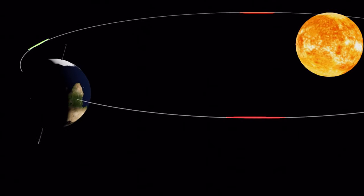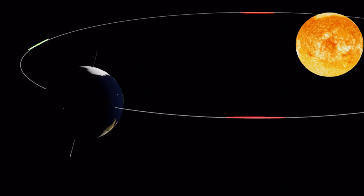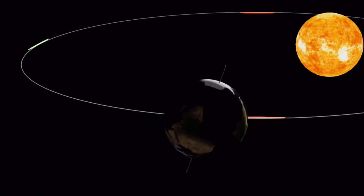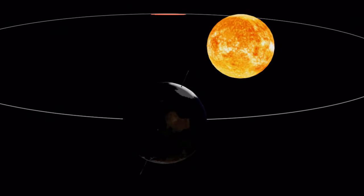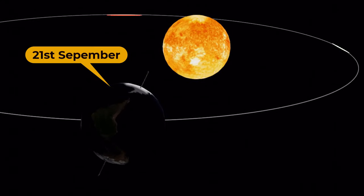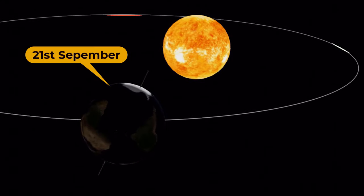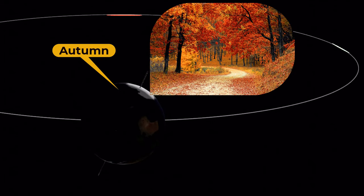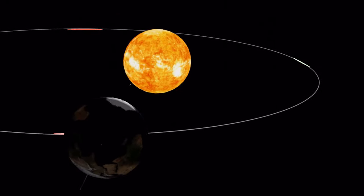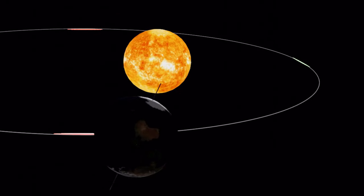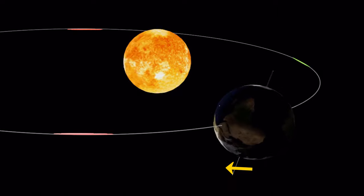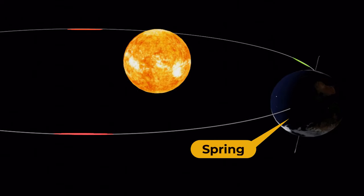As the Earth continues on its orbit, the Northern Hemisphere begins to tilt away from the Sun, resulting in shorter days and cooler temperatures. This is the time when flowers and trees begin to shed their leaves, marking the start of the autumn season. At the same time, the Southern Hemisphere begins to tilt towards the Sun, resulting in the spring season.